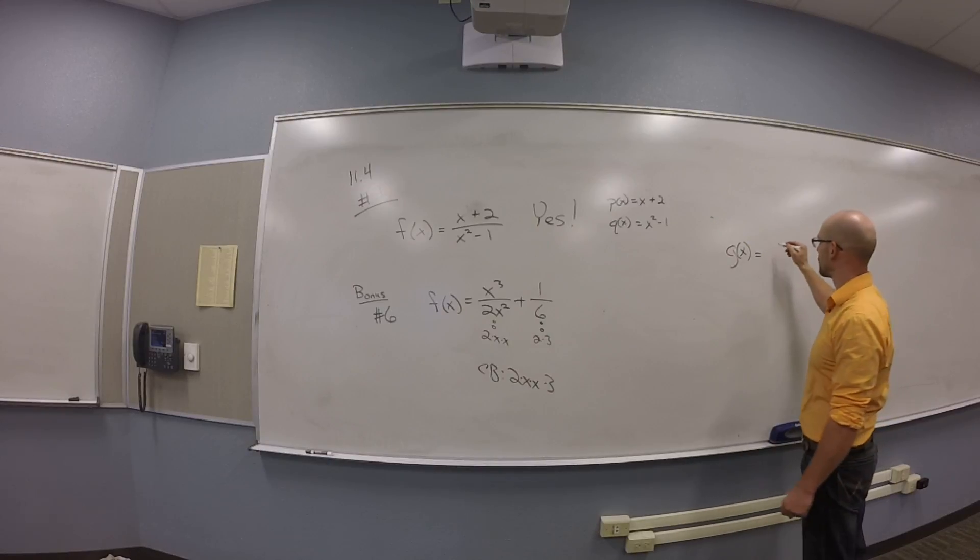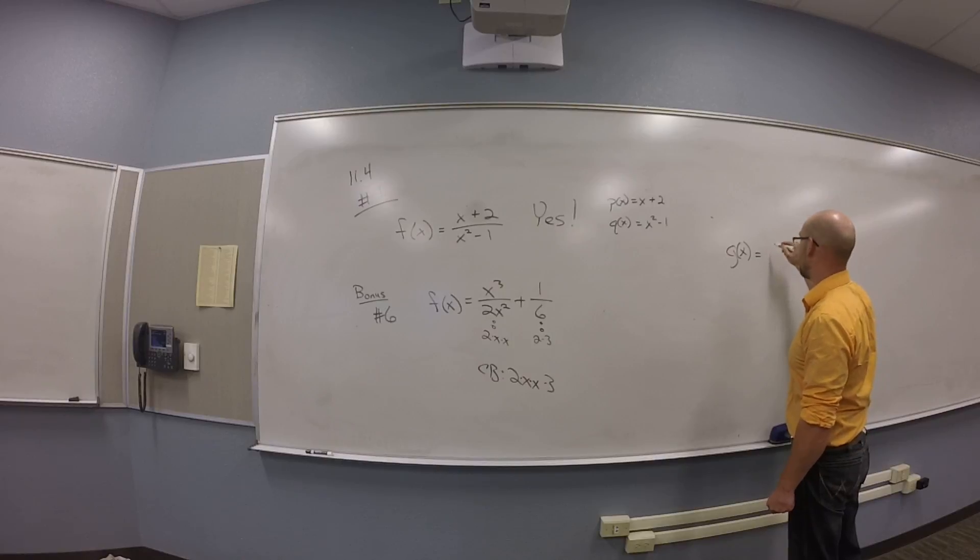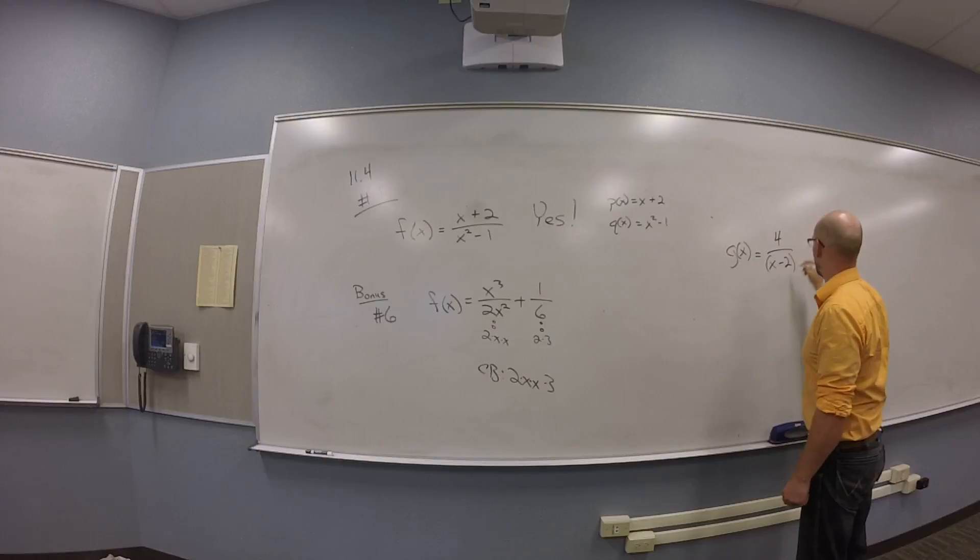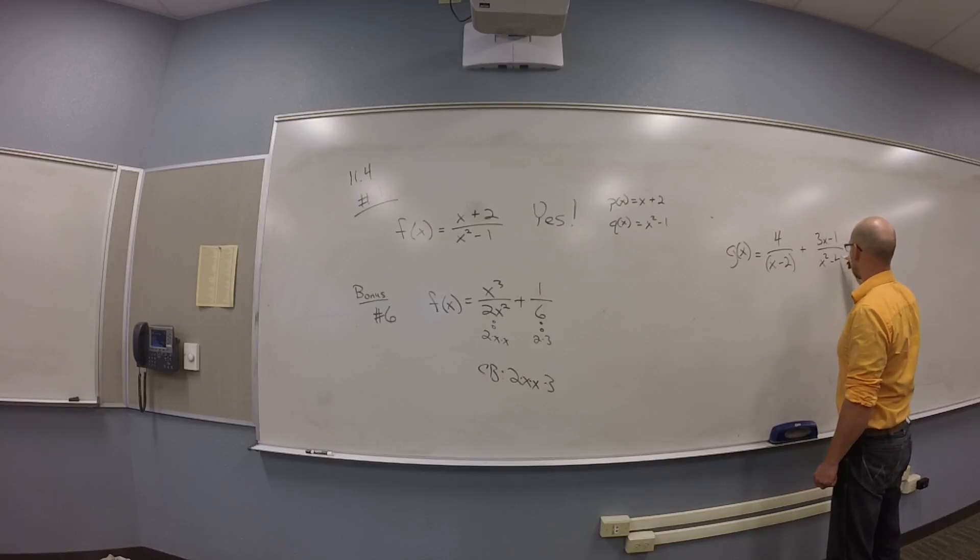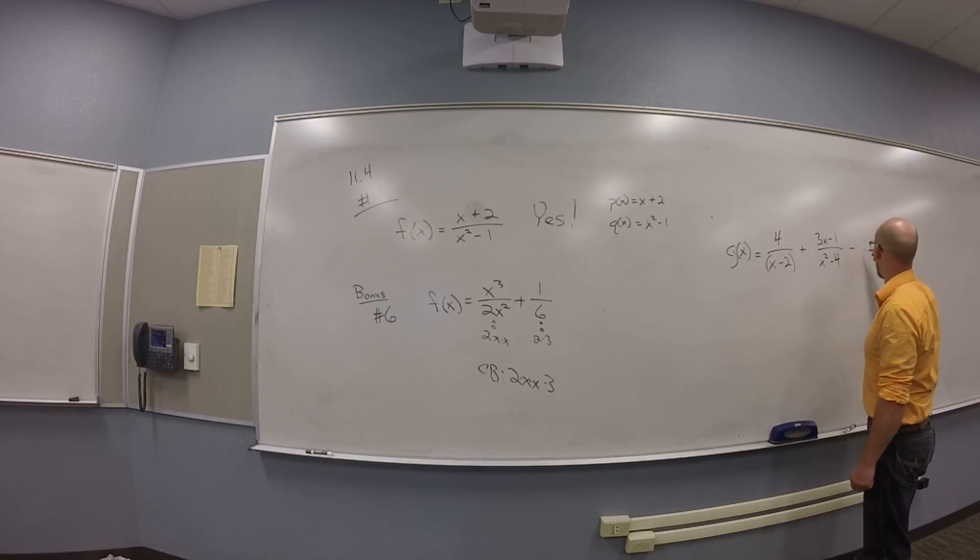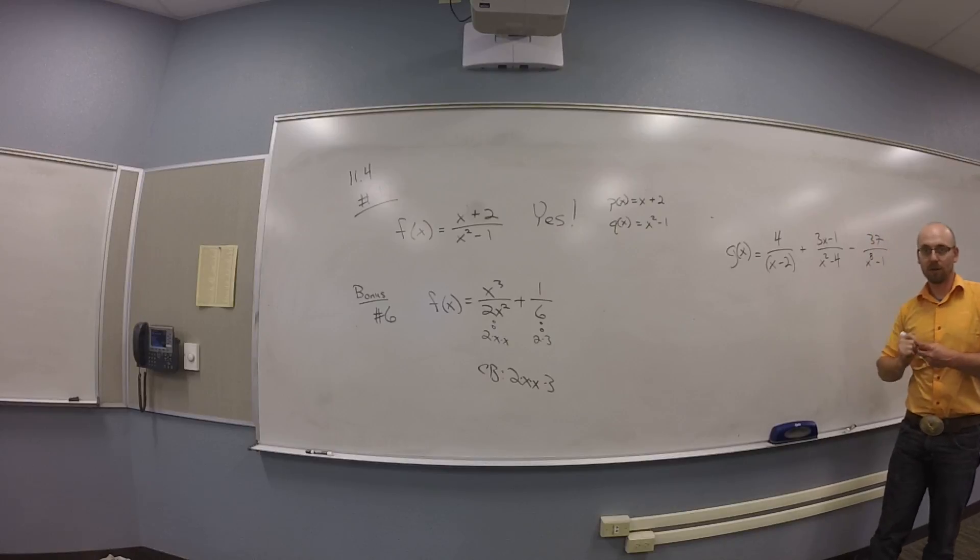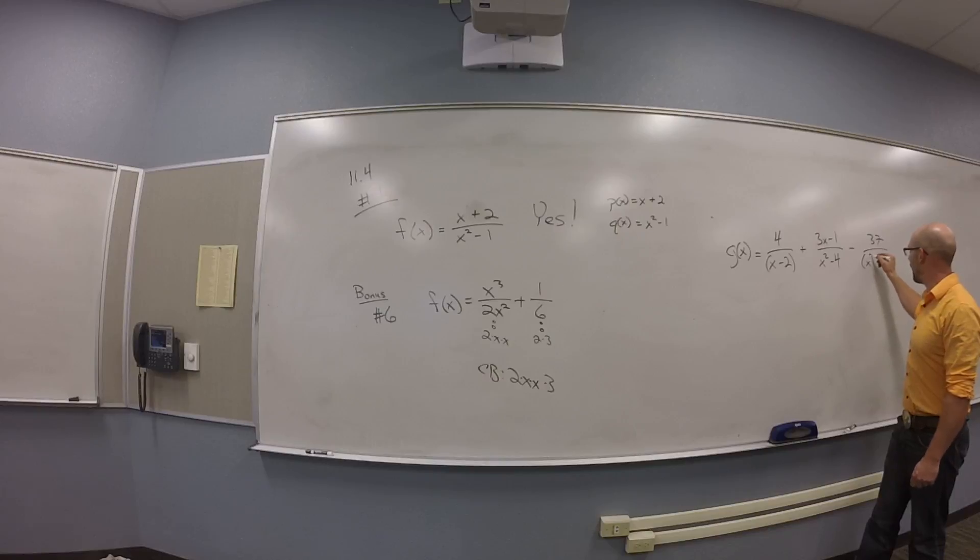So if it's like G of X is 4 over X minus 2 plus 3X minus 1 over X squared minus 4 minus 37 over X to the 8th minus 1 or something. Jesus Christ. Yeah, but that's straight out of hell. That's like, okay, fine, I'll make it X squared minus 1.